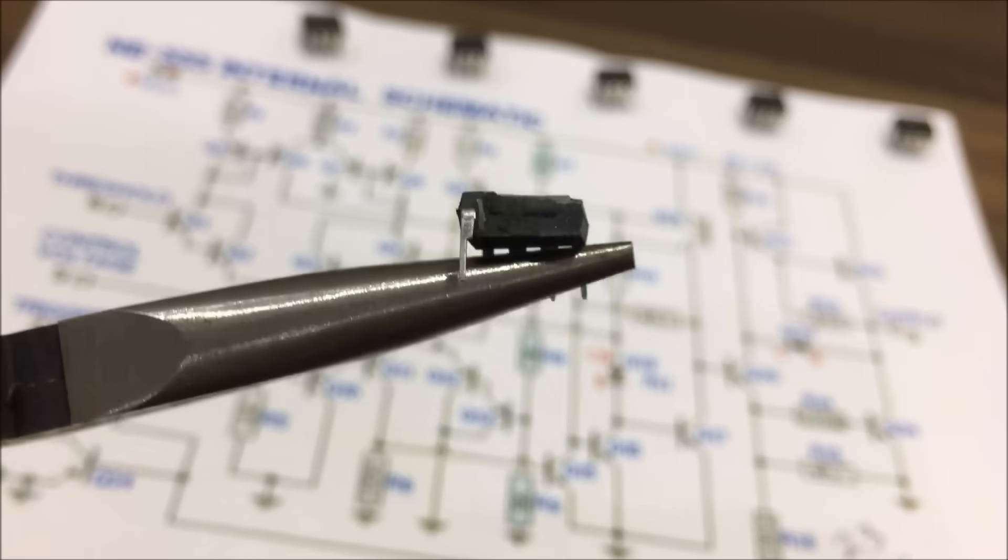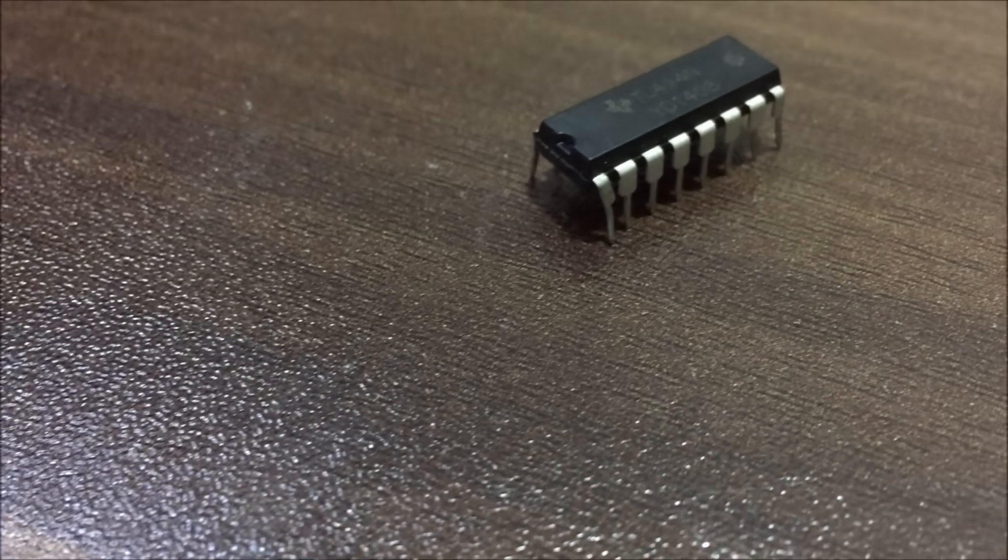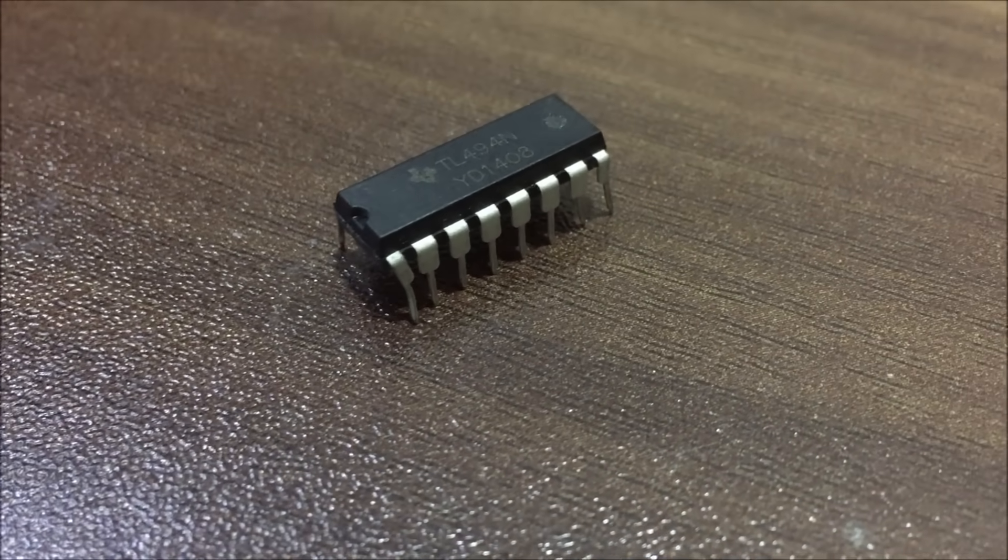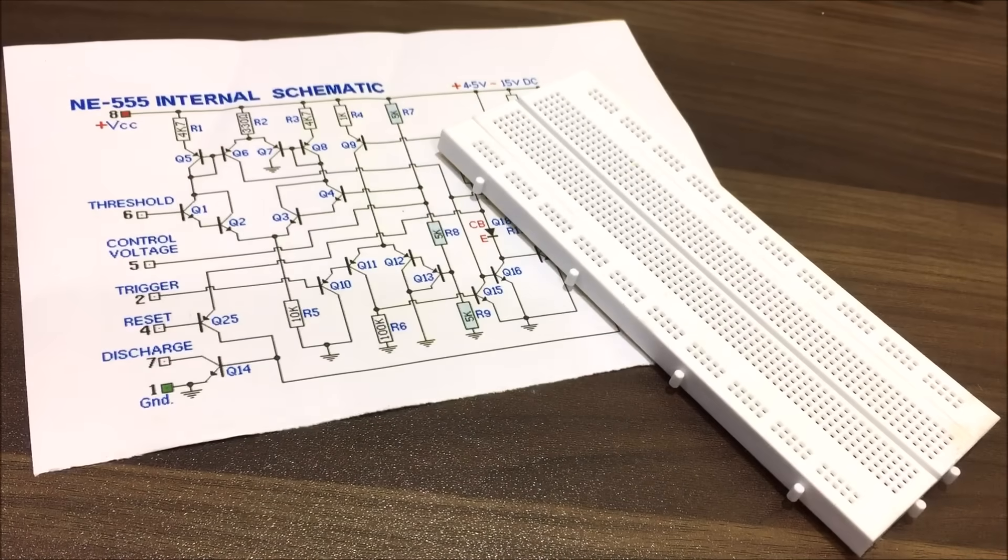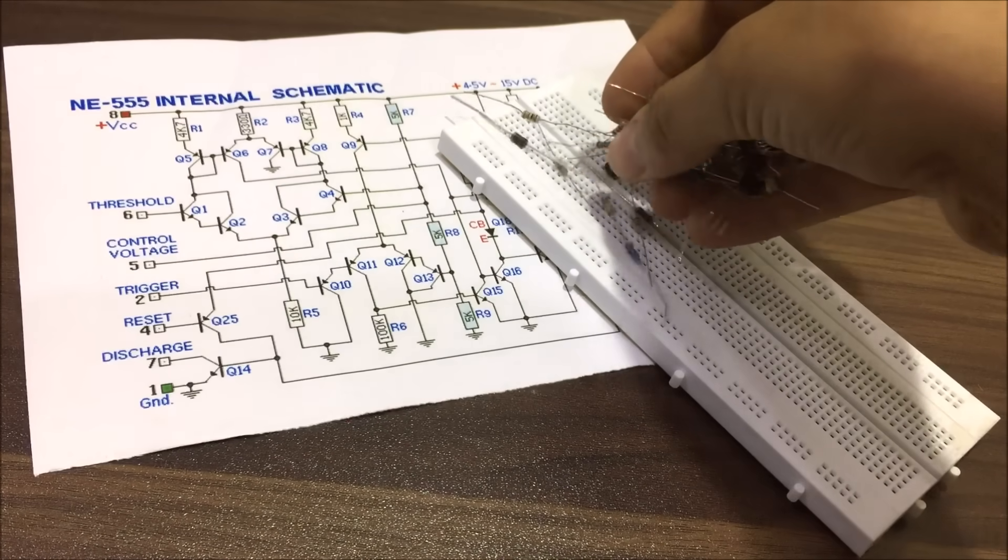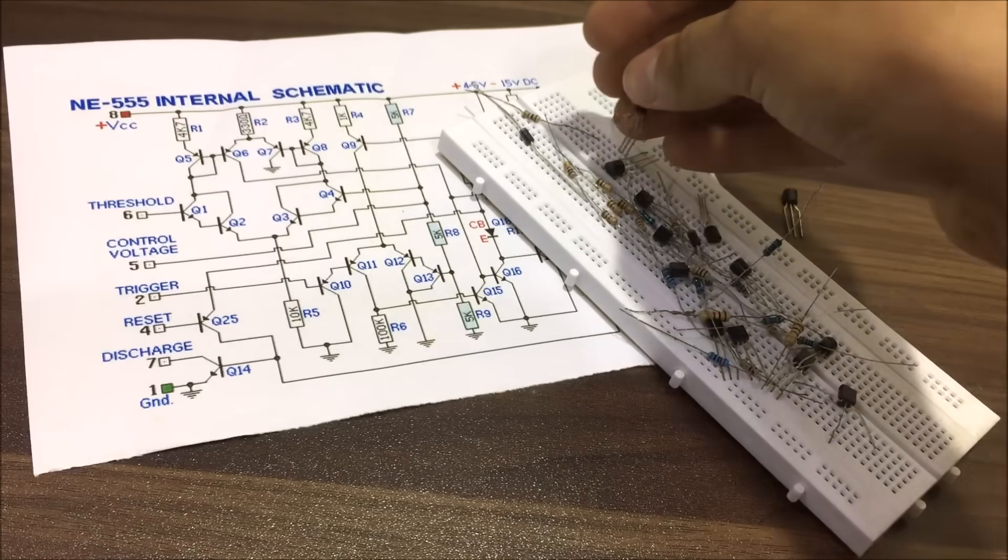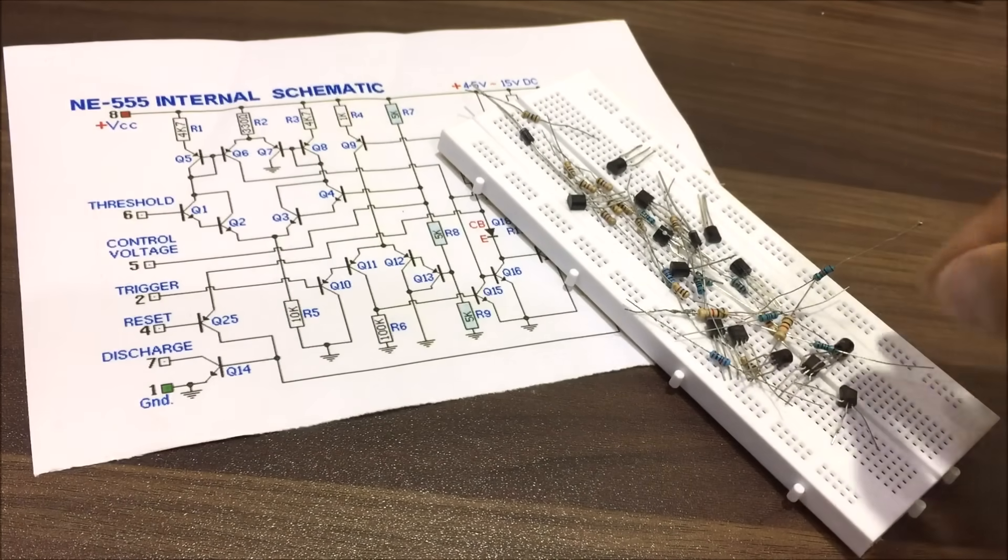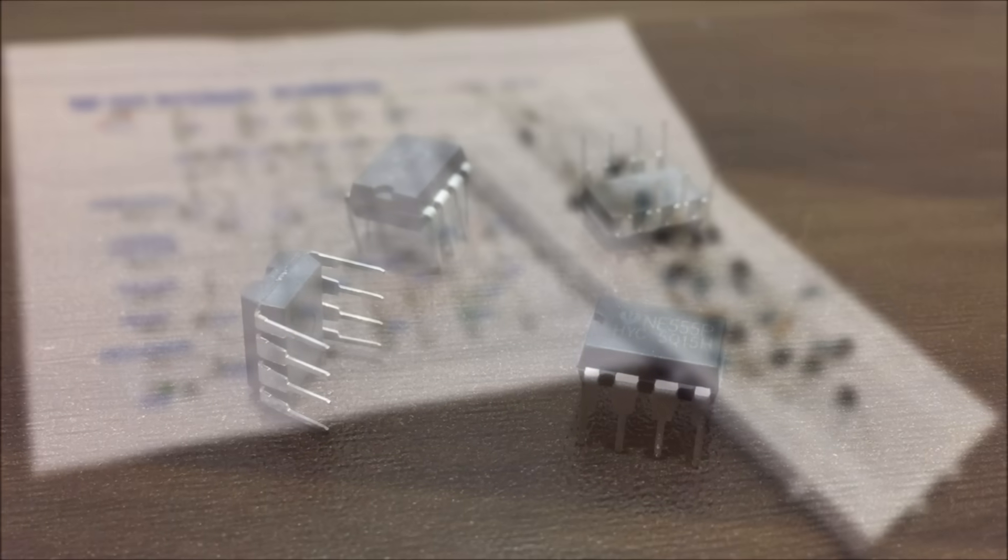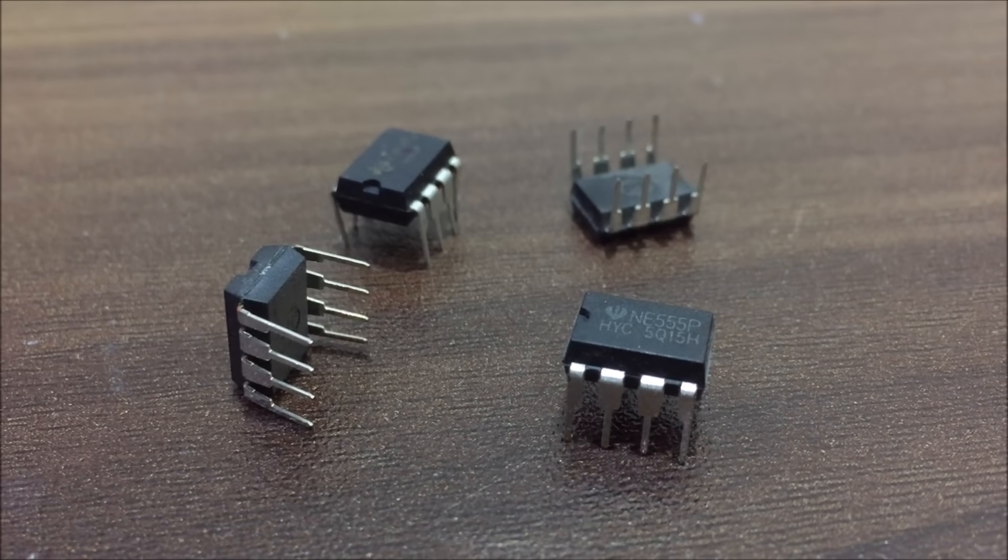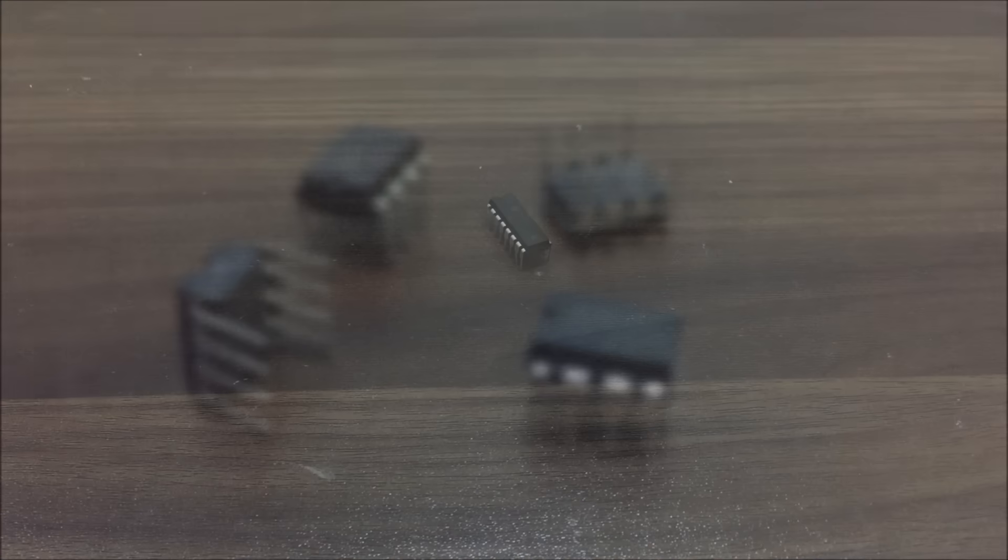Now the question is, what is the point of making these ICs if we can make one by using a schematic diagram? So if I would follow the schematic diagram and make the whole circuit by using the same amount of resistors and transistors, then it would take the entire breadboard to make the whole circuit. That's why, due to advancement in technology, they packed this rather big circuit in a very small IC so we can use this circuit in a very less space.